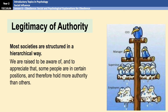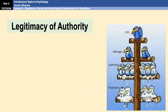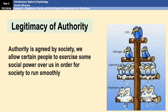We are raised from childhood to be aware of and to appreciate that some people hold more authority over us than others. Authority in any given situation is made known through things like a uniform — a police officer in uniform, a suit, or even something as simple as a high-vis vest — something that suggests that person is in control in that situation. Who holds what level of authority is generally agreed on by society, and as a society we allow certain people to exercise social power over us in order for society to run smoothly.